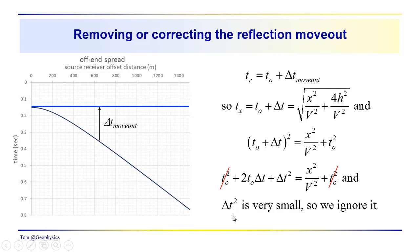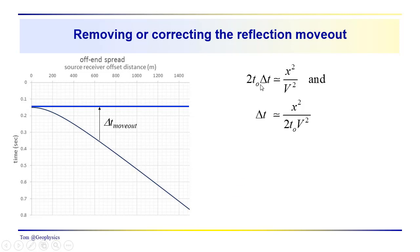Now, we're going to take a little closer look at that idea. But for now, that's the typical thinking on the process. So, we have 2t0 delta t is approximately equal to x squared over v squared, giving us the move out delta t approximately equal to x squared over 2t0 v squared. This delta t here is what we're interested in. We'd like to be able to subtract that from the actual hyperbolic arrival times in order to flatten out this reflection event.